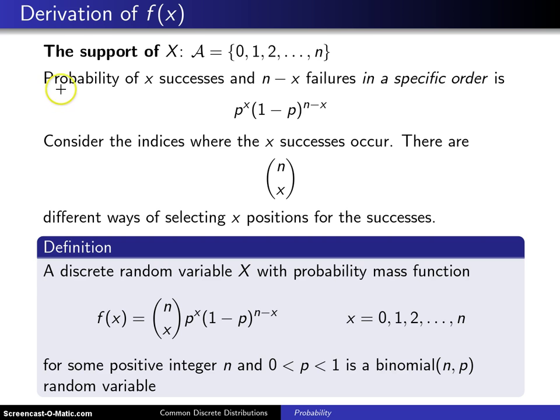The next thing we'd like to do is determine the probability mass function f(x) for this particular random variable. The probability of x successes and n minus x failures in a specific order is...